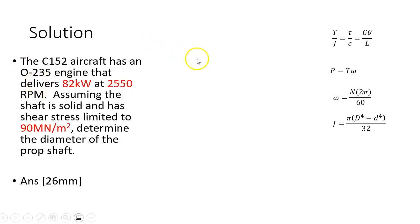These are the formulas that we use for all the torsion examples. This is the pertinent information from the question. I have power and I have RPM, essentially I have radians per second. So I can work out the torque.